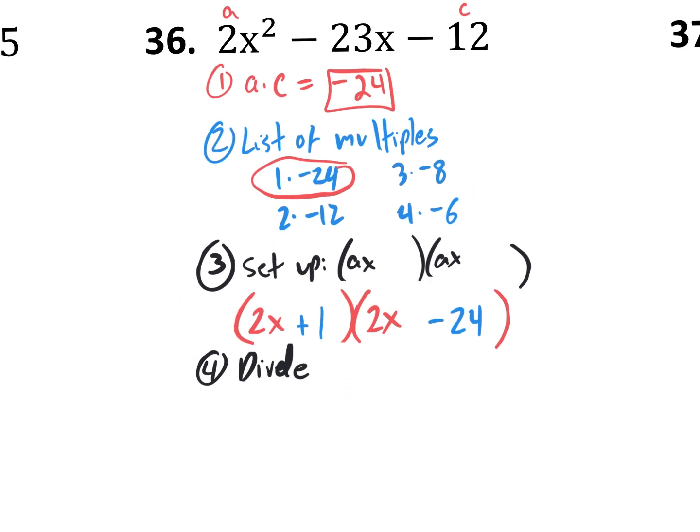The first one you leave it, the second one you can divide it by 2. Yep. So it would be X minus 12. Fourth step is to divide, and like you said, the first one we cannot divide. You just leave it. Or you could say I'm dividing by 1, but it's still the same thing. It doesn't change. The second one you could divide by 2. 2 divided by 2 is 1X, or actually 2X divided by 2 is a single X, and negative 24 divided by 2 is negative 12. And that is your answer.